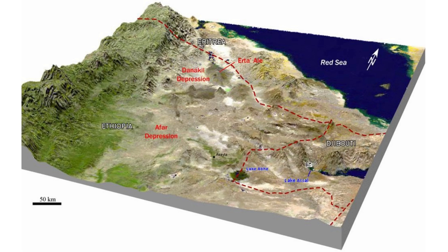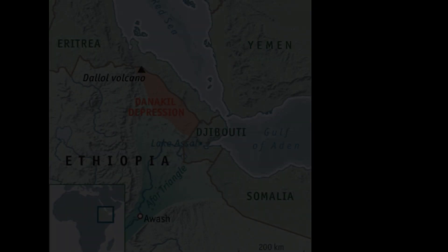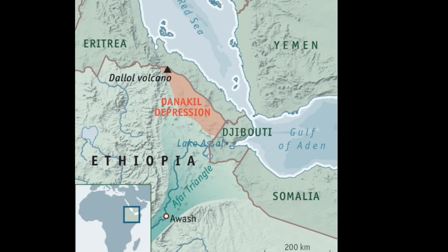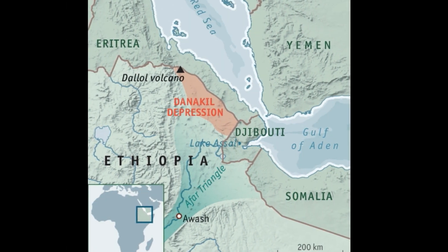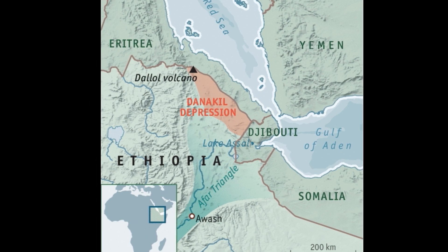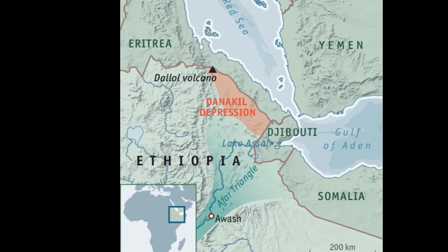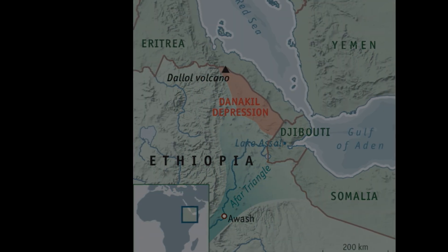The Danakil Depression is the northern part of the Afar Triangle or Afar Depression in Ethiopia. It is a plain approximately 200 by 50 kilometers, lying in the north of the Afar region of Ethiopia, near the border with Eritrea. It is about 125 meters (410 feet) below sea level and is bordered to the west by the Ethiopian Plateau, and to the east by the Danakil Alps, beyond which is the Red Sea.